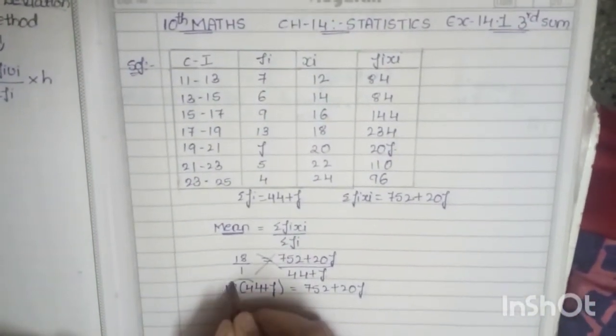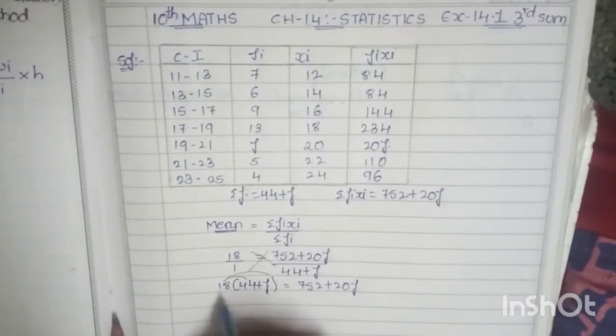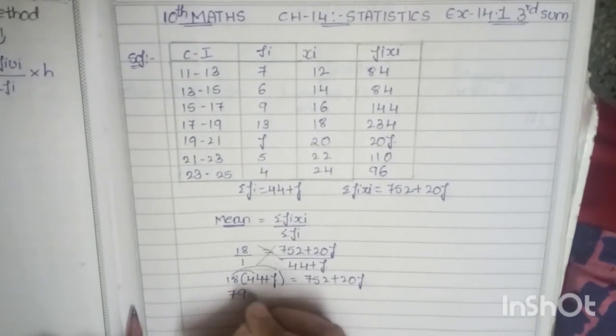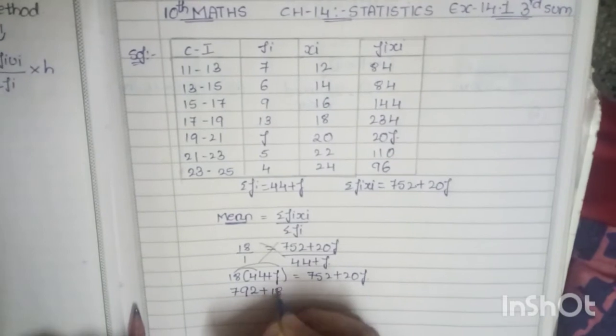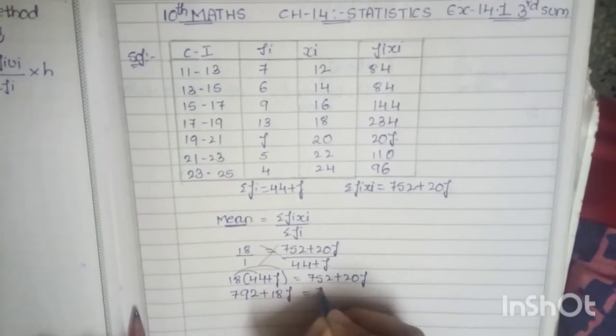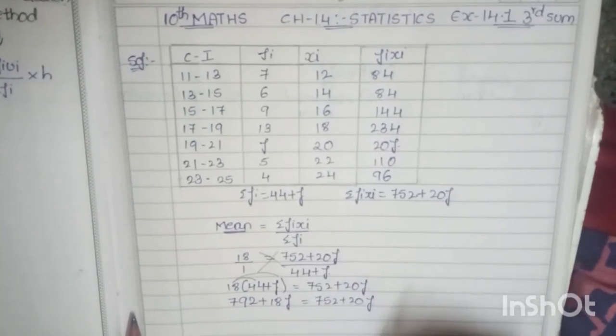You have to multiply these values - that is 18 into 44, 18 into f. So when you multiply 44 into 18, the answer is 792 plus 18 into f is 18f, which will be equal to 752 plus 20f.